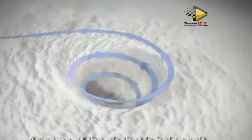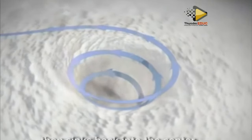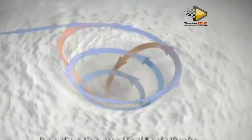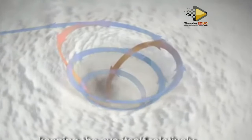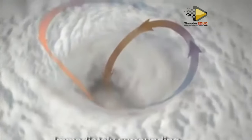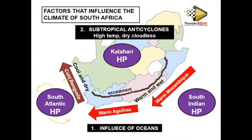Because they are all high pressure systems, what is their rotation? They rotate anti-clockwise. This is the anti-clockwise rotation — it is opposite to the low pressure. At low pressure we say it is clockwise, so this one is anti-clockwise. South Africa is affected by these three high pressure systems, all rotating anti-clockwise.